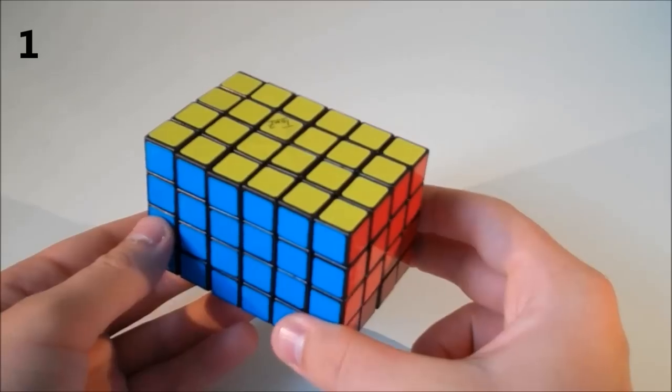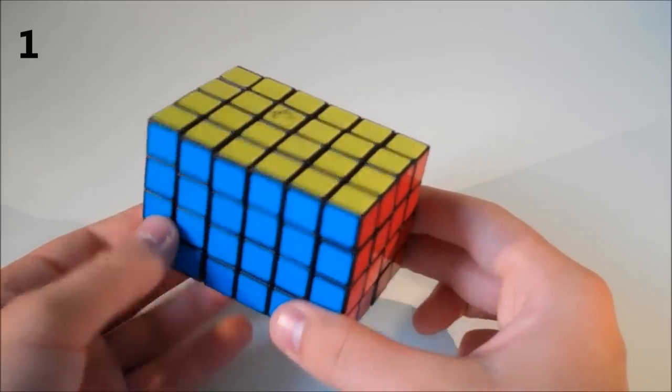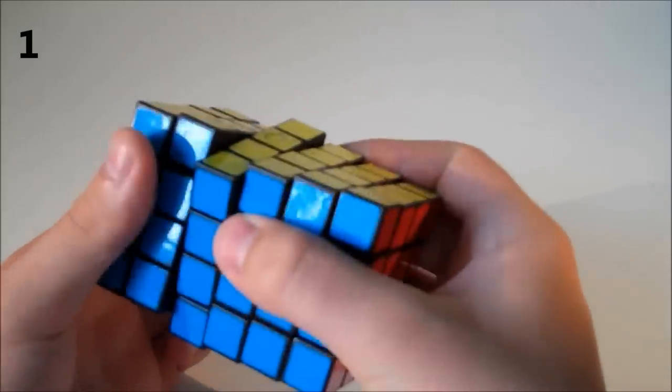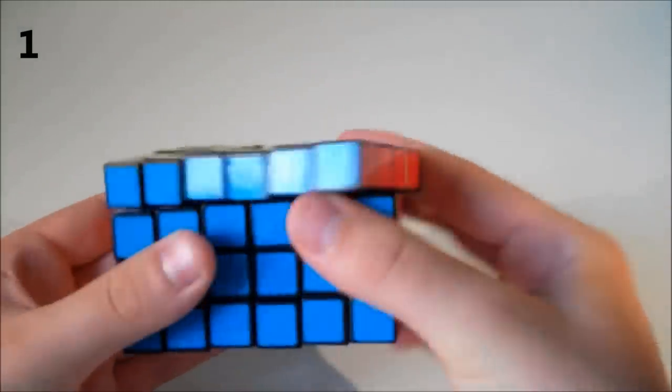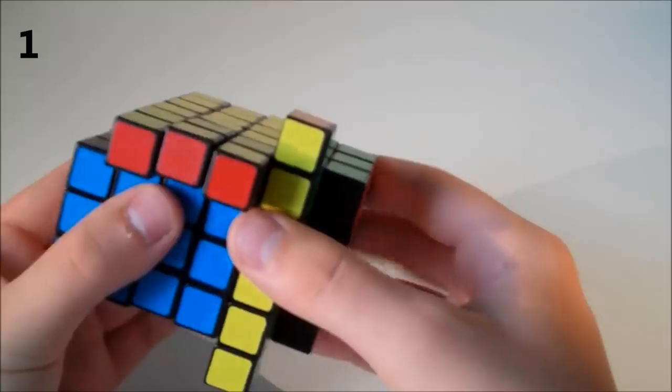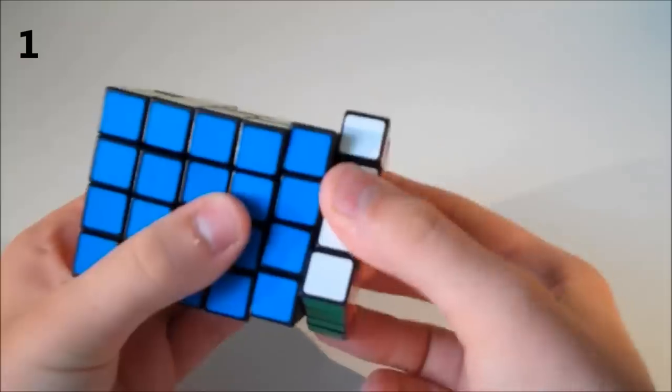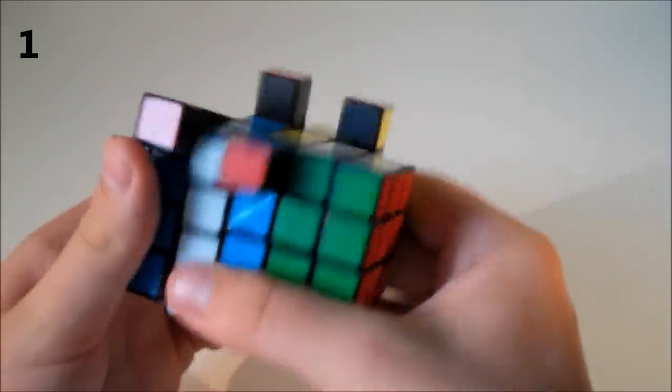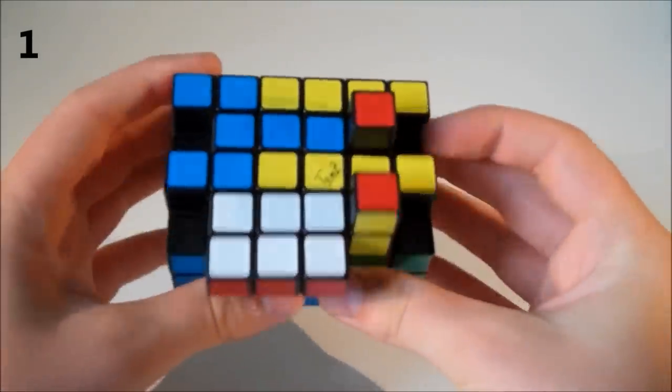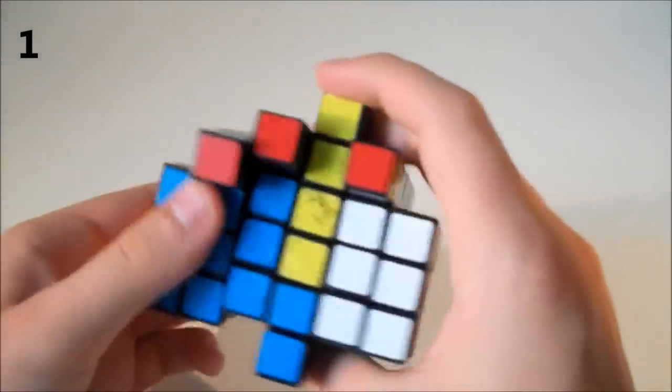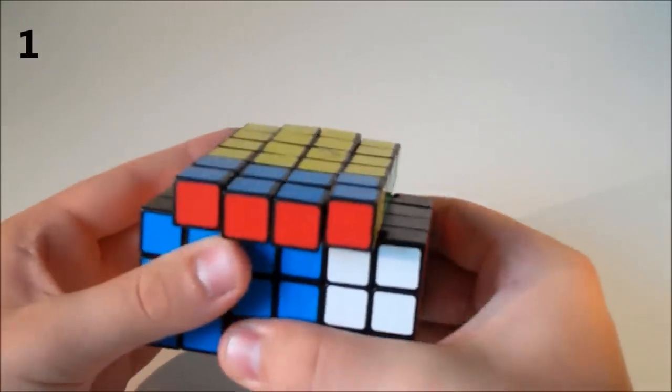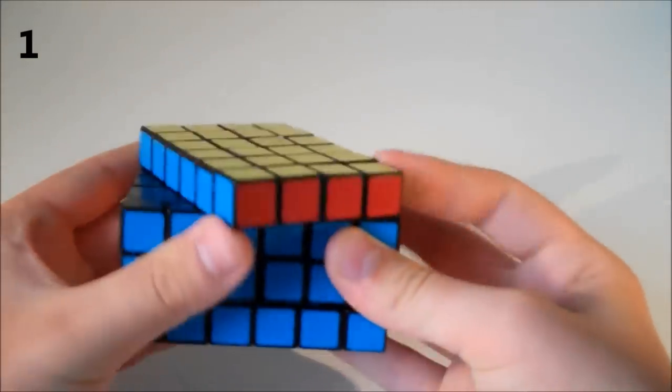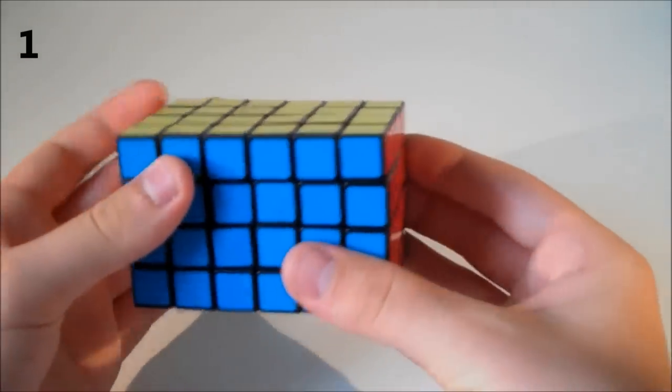My favorite puzzle at the moment is the 4x4x6. This is such a cool puzzle - it's a cuboid, it turns great, it's fully functional, and it shapeshifts like crazy. I really love cuboids and this is definitely my favorite one. I just love the way that it turns and the different ways that it can shapeshift. It's a really fun puzzle to solve as well. It's quite a challenge because every solve is different and you need to work out different cases every time you solve. It's my favorite puzzle at the moment.